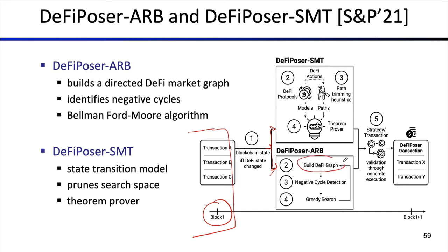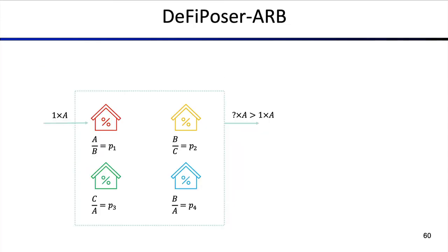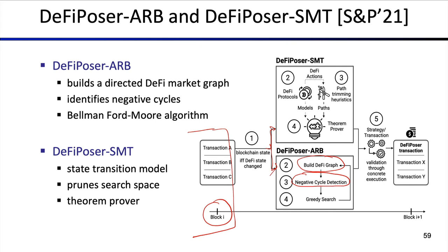With the ARP version or the Bellman-Ford DeFiPoser, we can build a DeFi graph of the various markets. Then we have a negative cycle detection — this is what the Bellman-Ford algorithm can do. The algorithm tells you whether there is a negative cycle or not. Then we perform a greedy search; you might find several cycles and take the one that's the most profitable for you.